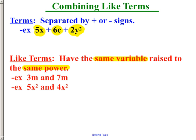For example, 3m and 7m are like terms because both of them have the variable m, and if they had an exponent, that exponent would be 1. They don't have an exponent because an exponent of 1 doesn't actually change the value. And then 5x squared and 4x squared are also like terms because they both have x squared.